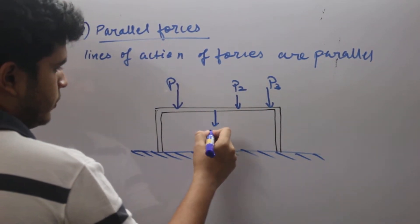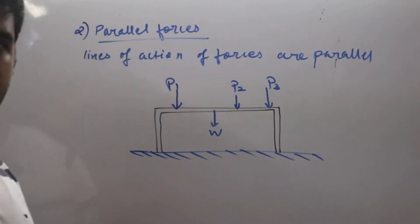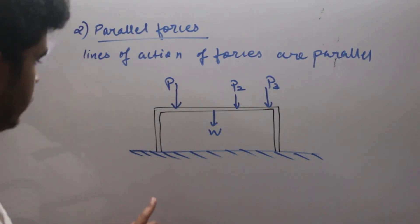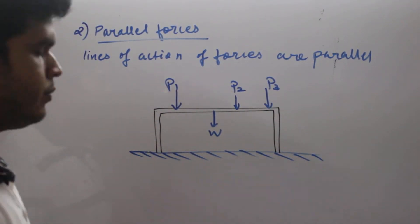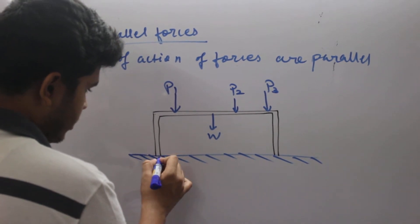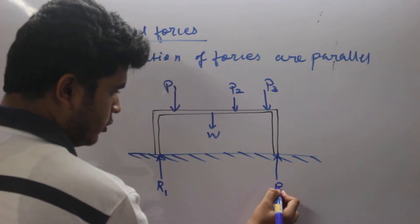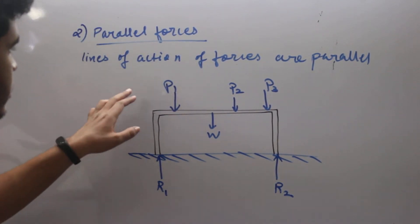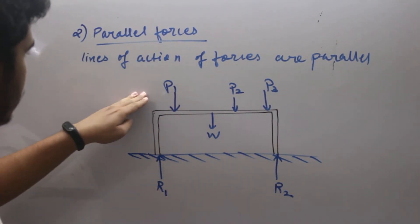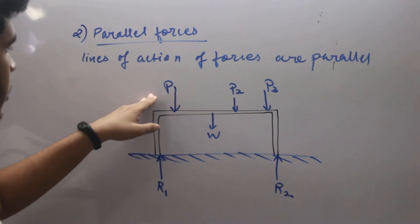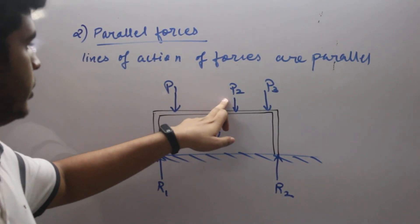Plus there will be reaction forces from these two points. As per Newton's third law, every action has equal and opposite reaction. Since there are four quantities of weight acting - P1, W, P2, P3 - R1 and R2 will be the reaction forces given by the ground on this bench.